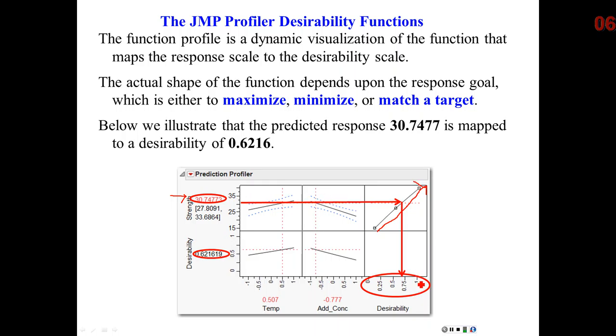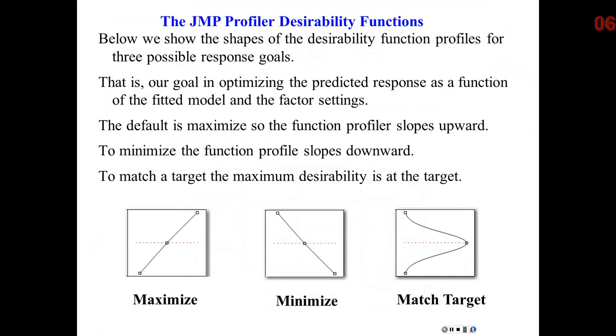So the function profile is sloping upward. That indicates that the higher the response, the higher the desirability, so this would be maximization. So this is what the function profile would look like if you wanted to maximize.